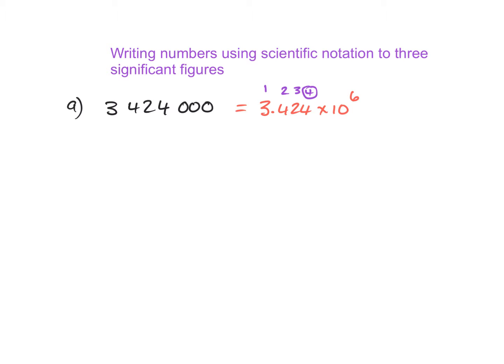So what do we do about that? We look at our fourth digit over here and determine whether or not it is greater than or equal to 5. In fact, we are going to round it — but it isn't greater than or equal to 5, so this can simply become a 0. That 4 becomes a 0, and our answer therefore would be 3.42 multiplied by 10 to the power of 6.